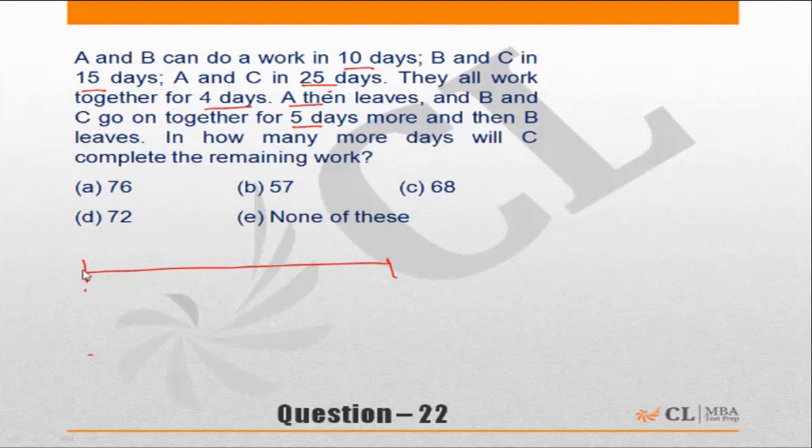For the first four days, from day 0 to day 4, A, B, and C all work together. After which A leaves, and B and C go on together for five more days. So that means from day 4 to day 9, there are five days more. A has left, so B and C alone are working.